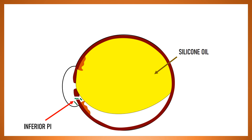In case of a phakic or a pseudophakic patient, such a situation is unlikely to arise because silicon oil would stay housed in the vitreous cavity. Unless of course, there is a zonular dialysis, in which case the silicon oil could migrate into the anterior segment.